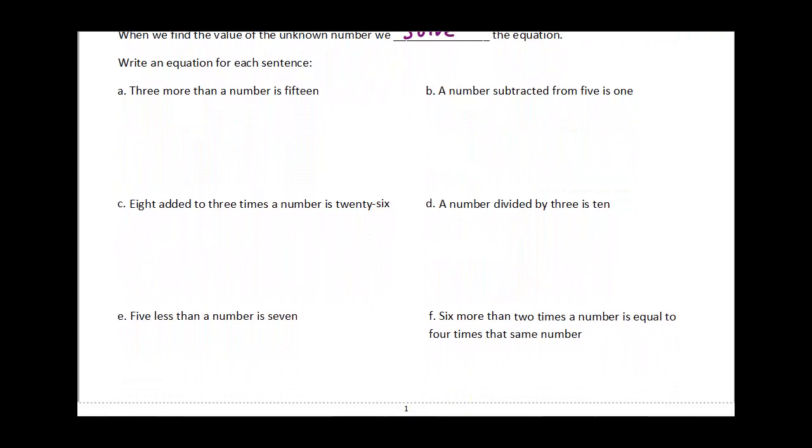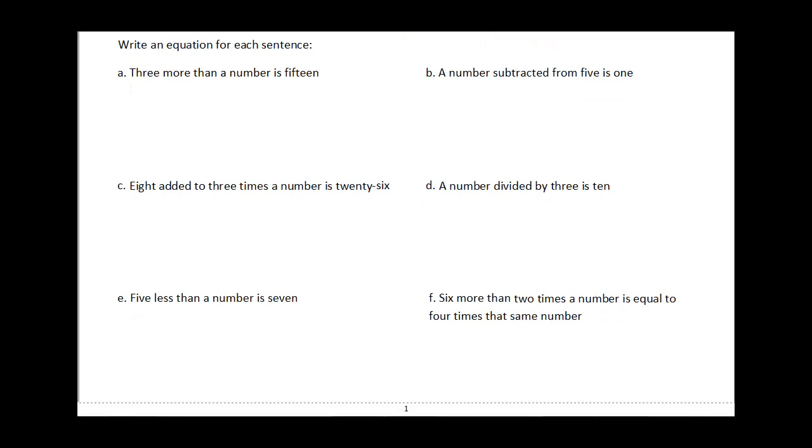What we need to be able to do right now is create an equation from each of the following sentences. What I'd caution you to do is read the phrase, for example '3 more than a number is 15,' and try to find the equal sign in that. The equal sign is kind of right there—it's 'is.'